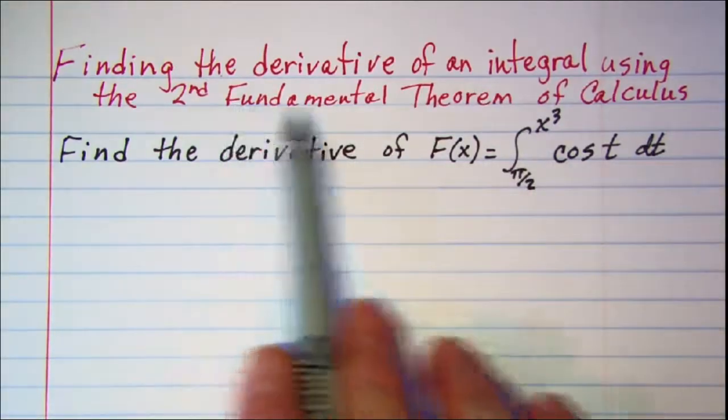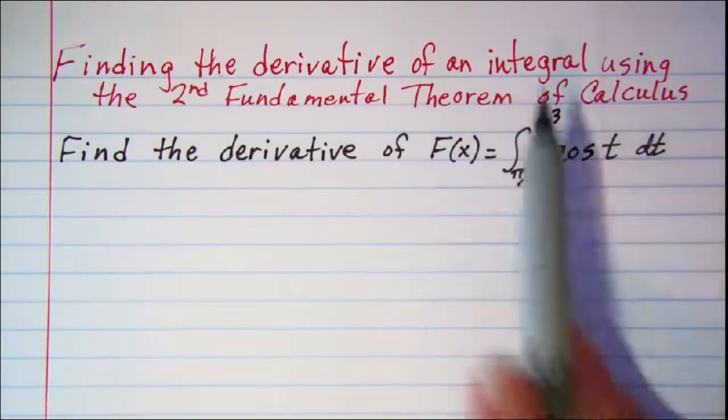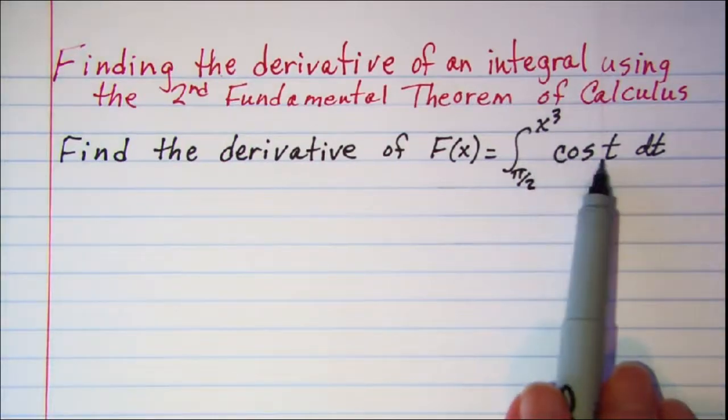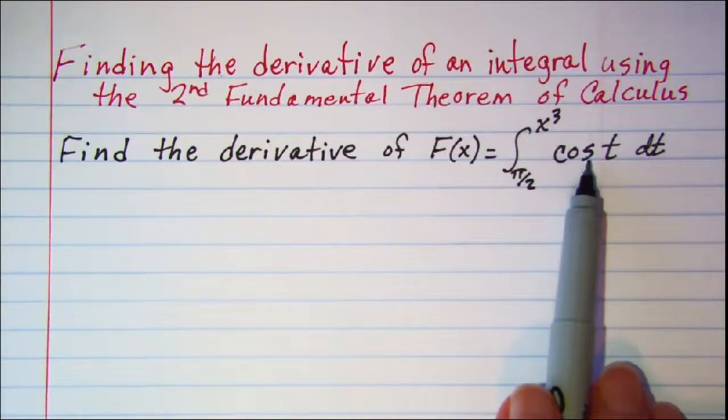Now in order to use the second fundamental theorem of calculus we know that our function needs to be continuous, and yes the cosine function is continuous.